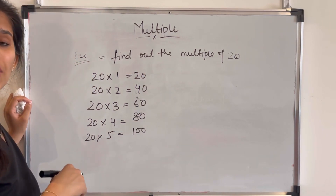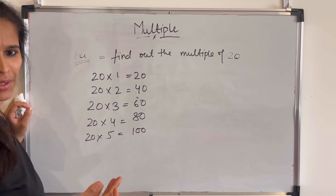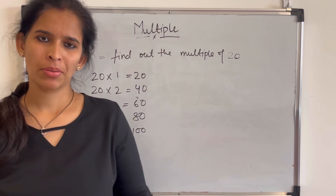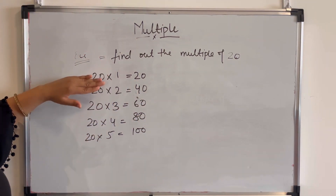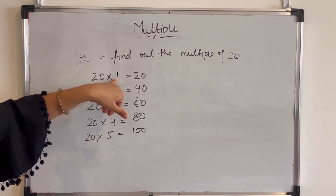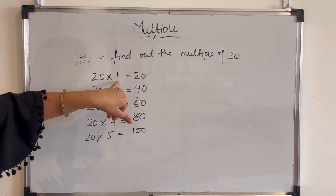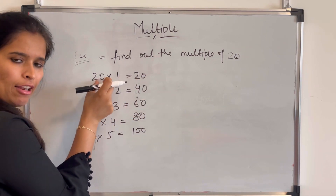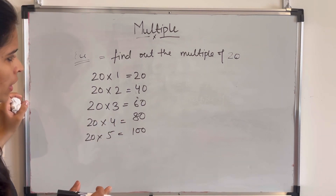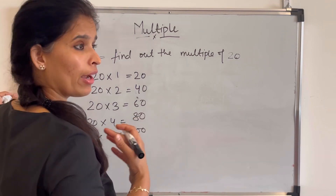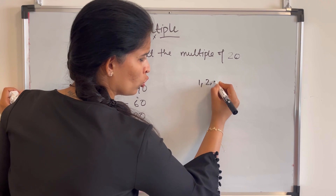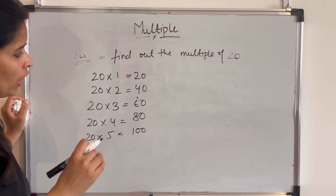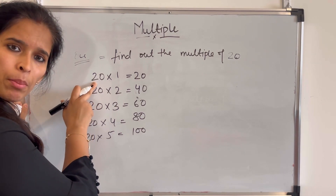We can find infinitely many multiples of any number. Now, the properties of multiples: the first property is every number is a multiple of itself — for example, 9 multiplied by 1 gives 9, so 9 is a multiple of itself. The second property is every number is a multiple of 1 — if you find the multiples of 1, they are 1, 2, 3, 4... so every number is a multiple of 1.